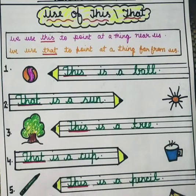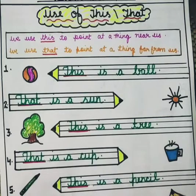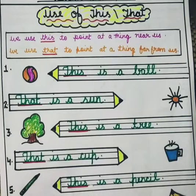Next example: pencil. This is a pencil. You can see this. We have used this because the pencil is near. This is a pencil.